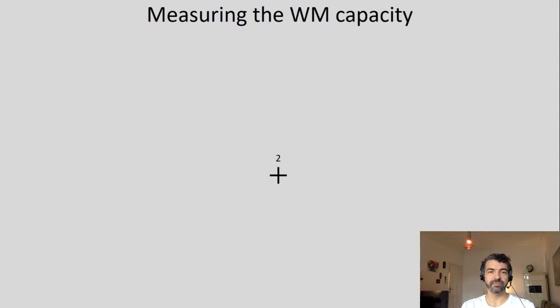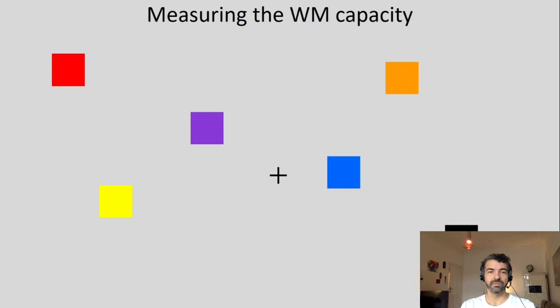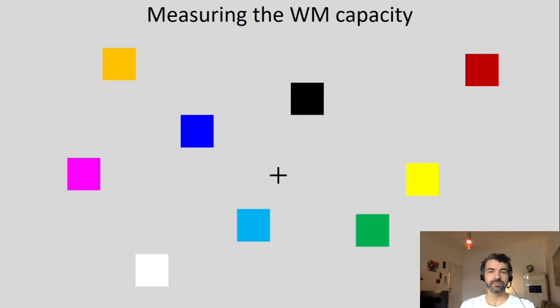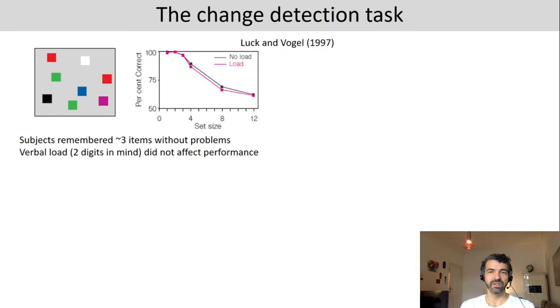Let's do it again. Was there a change or not? There was actually a change at this location. And one last example — again, there was a change at this location this time.